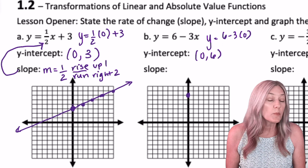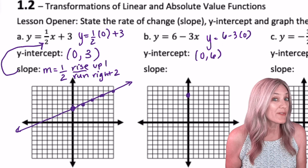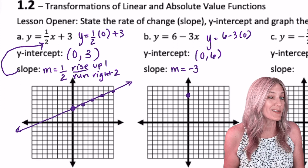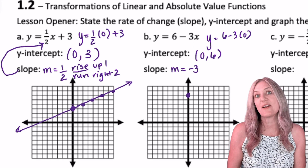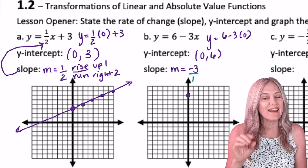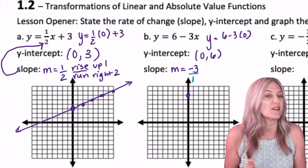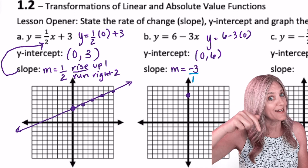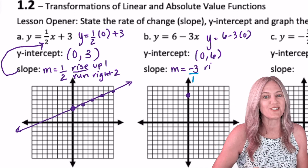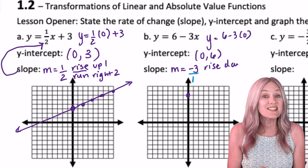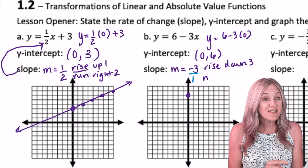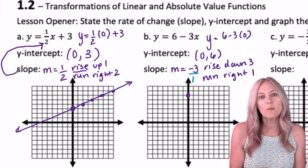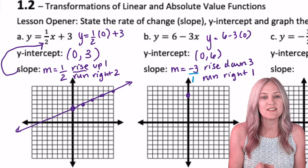Plot that point. Slope will be negative three, always with the x. It's best written as a fraction, so let's put that over one and keep the negative in the numerator. That means we'll have a rise in the negative direction three units, but still a run in the positive right direction one unit. We'll plot it from the point zero, six.